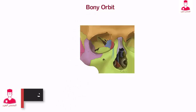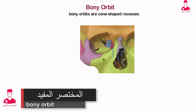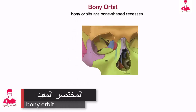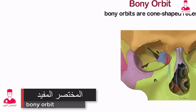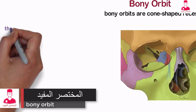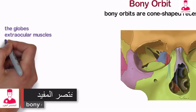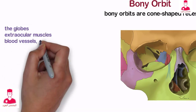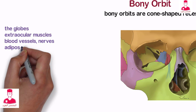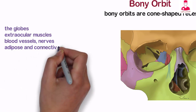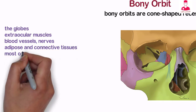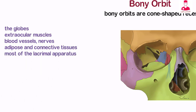The bony orbits are cone-shaped recesses that contain the globes, extraocular muscles, blood vessels, nerves, adipose and connective tissues, and most of the lacrimal apparatus.